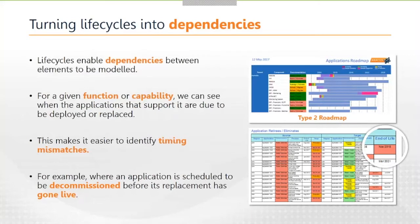Life cycles also enable us to start to understand dependencies. For example, if we're working with a given area of the business — a business line, function, or capability — we can take a look at the applications or processes that support that capability and understand when a legacy application is being decommissioned and when its replacement is coming into service. This allows us to identify timing mismatches. We have an example report generated from Abacus which uses very simple conditional formatting to check whether a replacement application is not going to be ready in time to match the planned decommissioning date of the application it's supposed to replace.